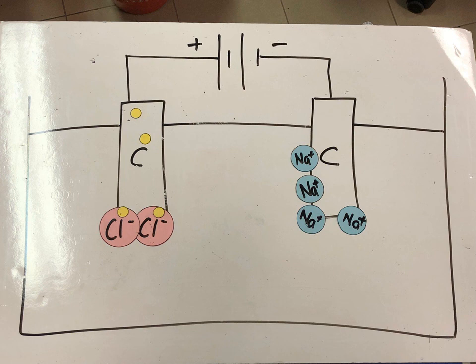The two electrons that have been lost by the chloride anions will now move towards the negative electrode.